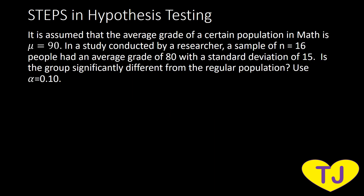We have our problem here. It is assumed that the average grade of a certain population in math is mu equal to 90. In a study conducted by a researcher, a sample of n equal to 16 people had an average grade of 80 with a standard deviation of 15. Is the group significantly different from the regular population? We use alpha, the level of significance, equal to 0.10.